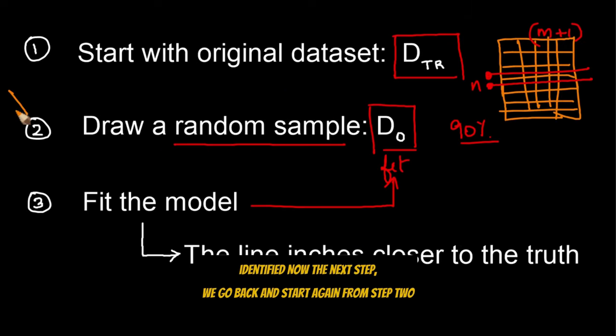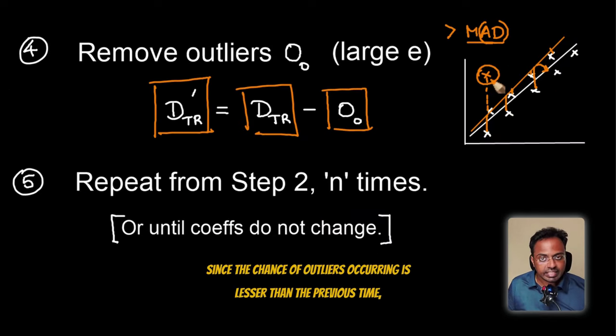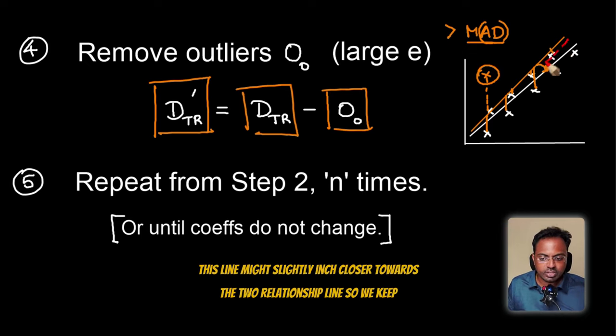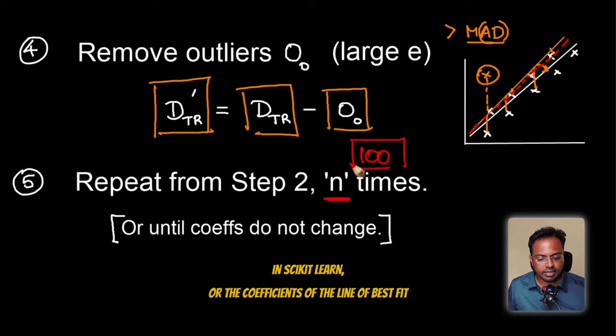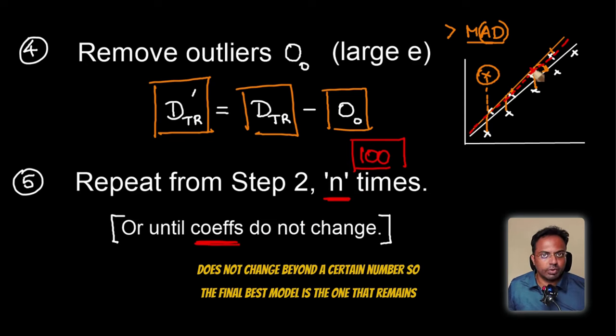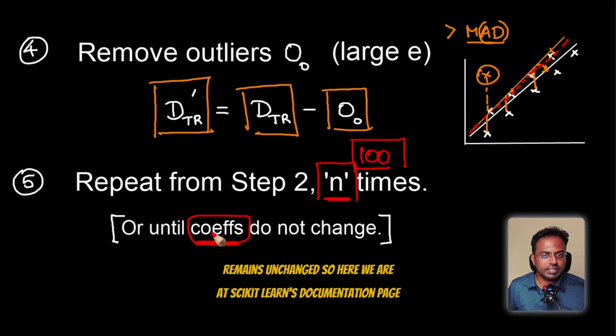Now the next step, we go back and start again from step two, where we again draw a random sample, this time D1 perhaps for the second iteration. And we will fit a new regression model again and find the line of best fit. Now this time, since the chance of outliers occurring is lesser than the previous time, the chances are this line that's for the second iteration, this line might slightly inch closer towards the true relationship line. So we keep repeating all these steps until n number of times, which is by default 100 times in scikit-learn, or the coefficients of the line of best fit does not change beyond a certain number. So the final best model is the one that remains after the n number of iterations are completed or the coefficients of the model remain unchanged.